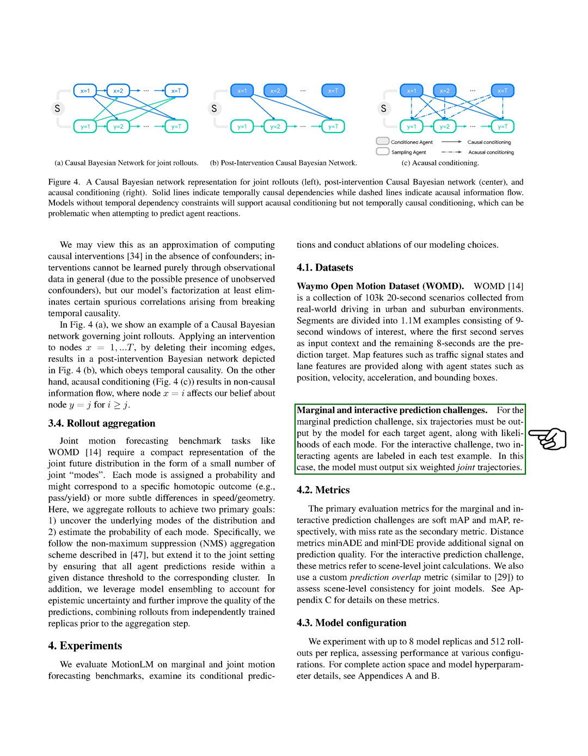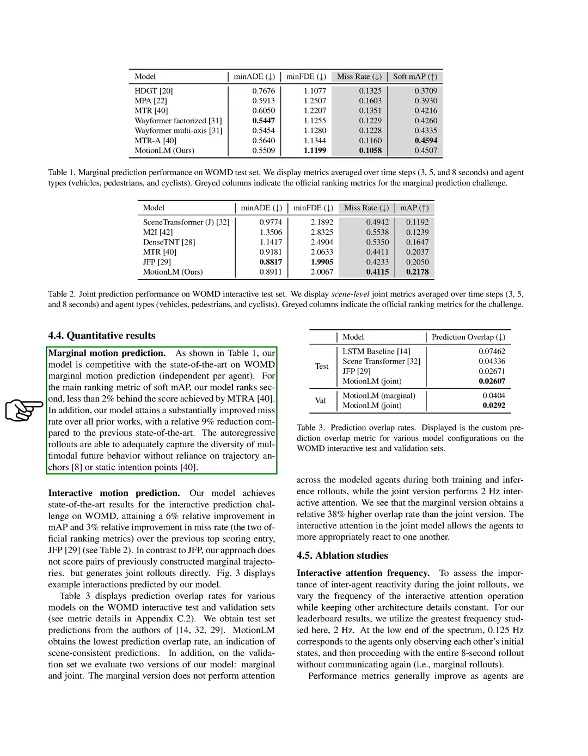We also participated in two prediction challenges, one for individual agents and one for interacting agents. Our model performed well in these tests, ranking second in the marginal prediction challenge and significantly reducing the miss rate compared to previous models. We found that our model was able to capture the diversity of possible future actions without relying on fixed points or trajectories.